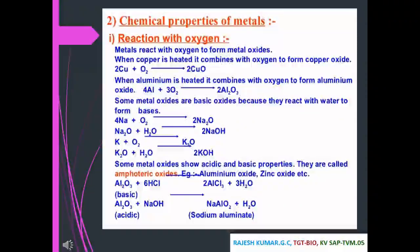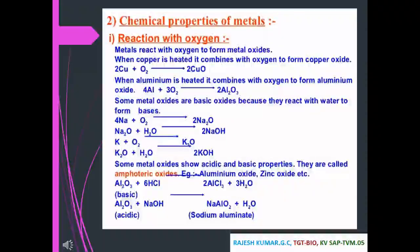Al₂O₃ + 6HCl gives 2AlCl₃ + 3H₂O — here Al₂O₃ acts as a basic substance, giving a salt and water when combined with an acid. Al₂O₃ + NaOH gives NaAlO₂ (sodium aluminate) — here Al₂O₃ acts as an acidic substance, giving a salt and water when reacting with a base. So amphoteric oxides are oxides which behave both as a base and an acid.